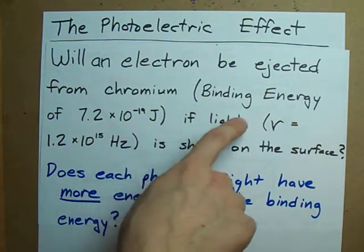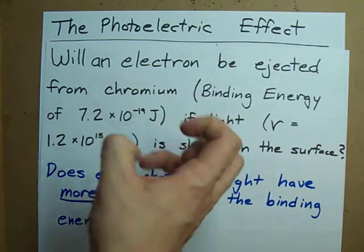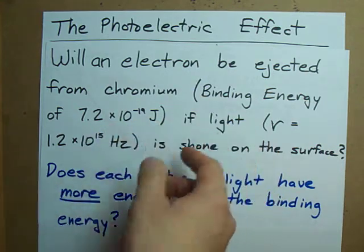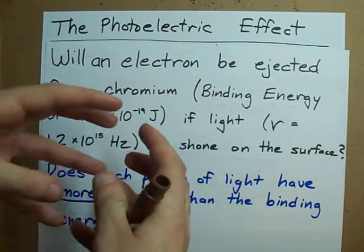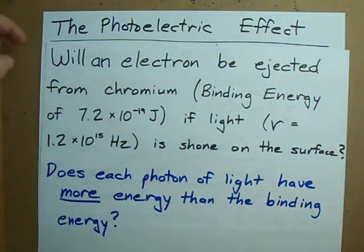Now if the light doesn't have enough energy, if each photon does not have enough energy, then the electrons may be excited inside each atom, but they stay in the atom and they aren't ejected from the metal.